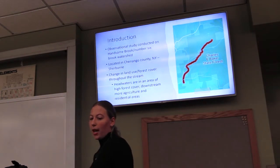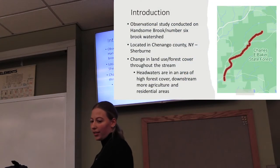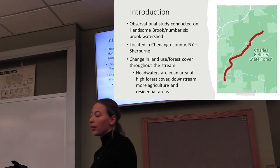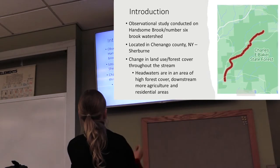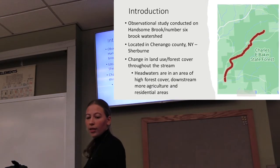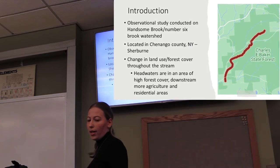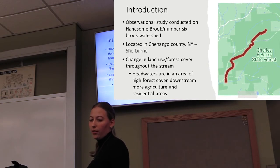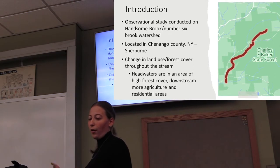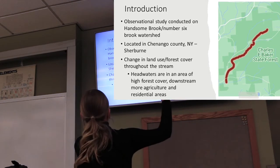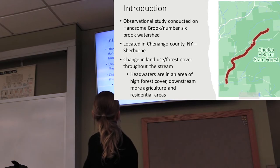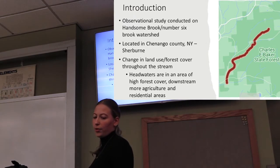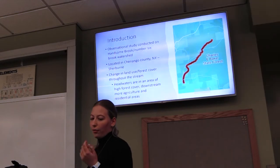This was an observational study conducted on Hanson Brook and the number six brook, which flows into Hanson Brook — that's what's shown there. The red indicates the number six brook. This is located in Shenango County and more specifically Sherbourne, New York. Throughout this stream there is a large change in forest cover. Starting high in the watershed, this brook is actually in a state forest — that's the headwaters — and as you move downstream there's more residential and agriculture.